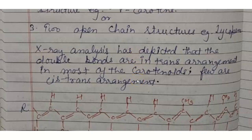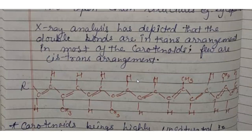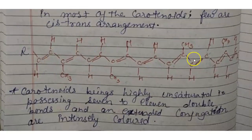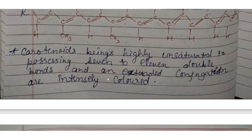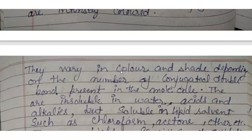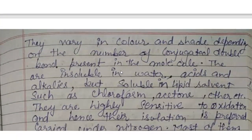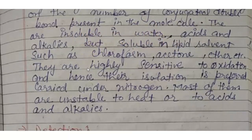X-ray analysis has shown that double bonds are in trans arrangement in most carotenoids, while a few have cis-trans arrangements. Carotenoids are highly unsaturated, possessing seven to eleven double bonds with extended conjugation, making them intensely colored. They vary in color and shade depending on the number of conjugated double bonds present in the molecules.